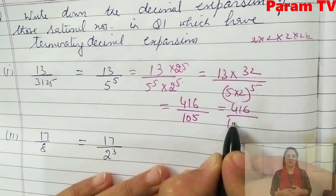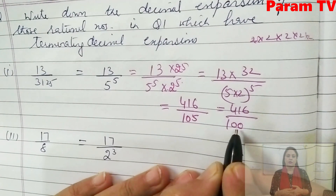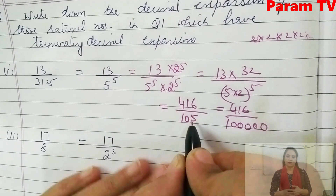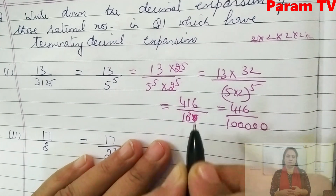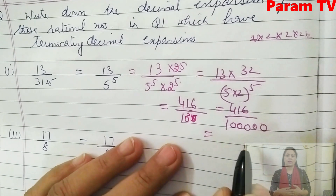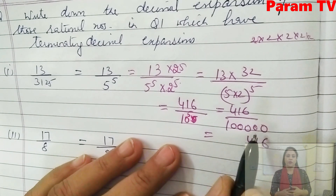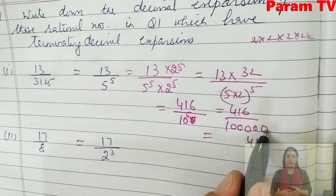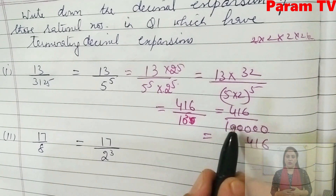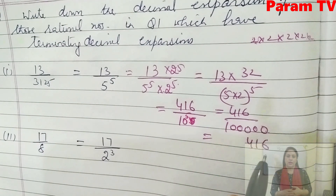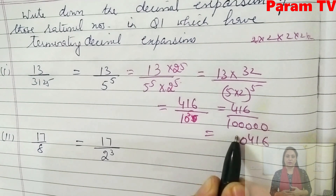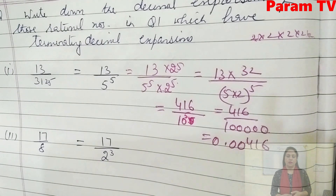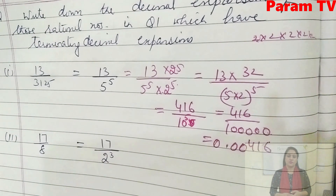10⁵ means 5 zeros. So 416 divided by 100000 — count 1, 2, 3, 4, 5 decimal places from the right in 416. This gives 0.00416. That is the decimal expansion of 13/3125.